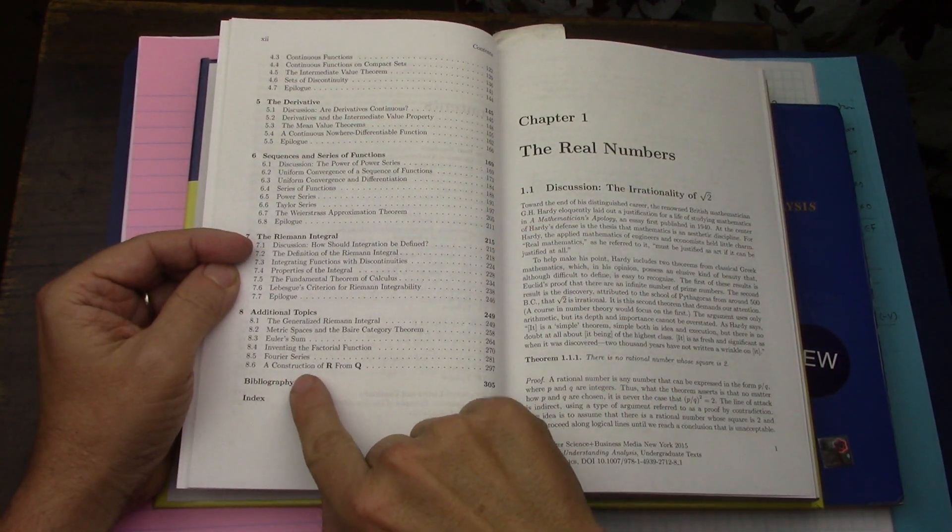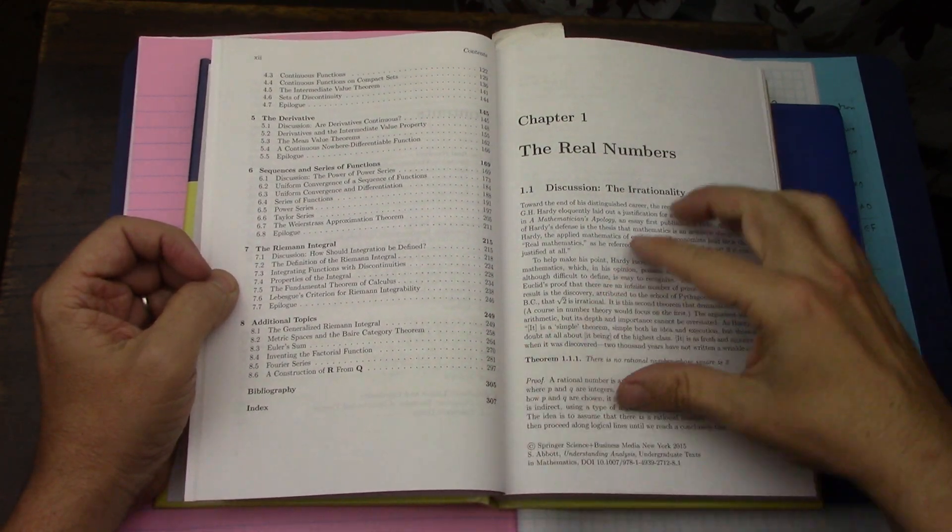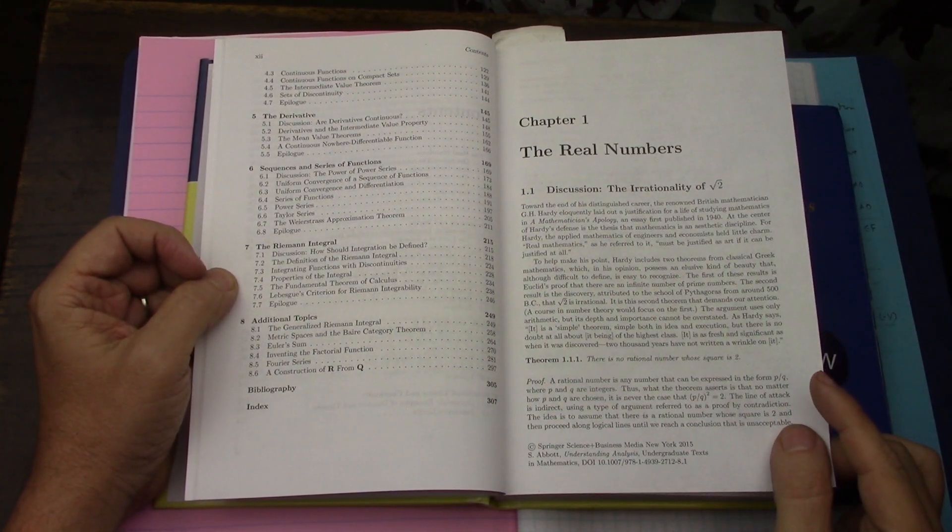I've already covered the construction of R from Q because I attempted to read it back when I was reading Mendelsohn.